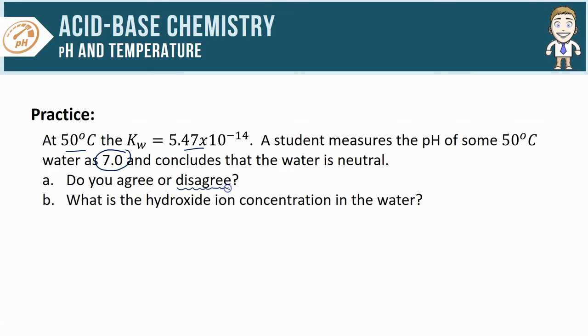Because a pH of 7 only corresponds to a neutral solution at 25 degrees C, and here the temperature is up at 50. We could even go a step further and say that because the temperature is increased, my neutral pH is going to have decreased somewhere less than 7. So the fact that we are getting a pH of 7 tells me that this solution is actually basic.